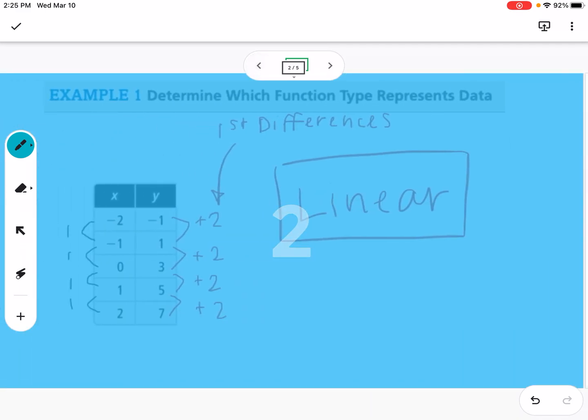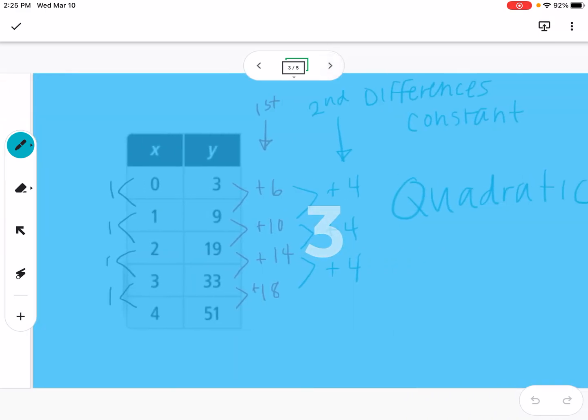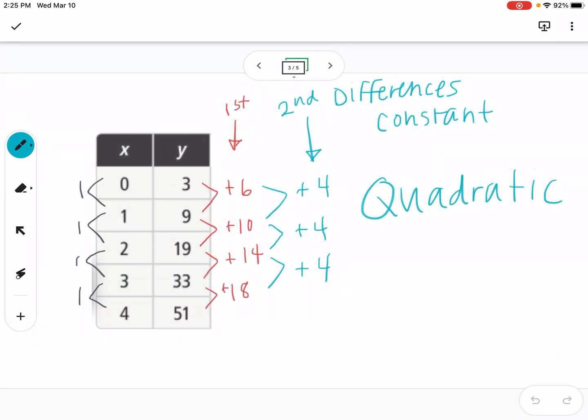So again, if we have constant first differences, it's linear. If we find the first differences and they're not constant, but then we find the second differences and they are, then it is quadratic.